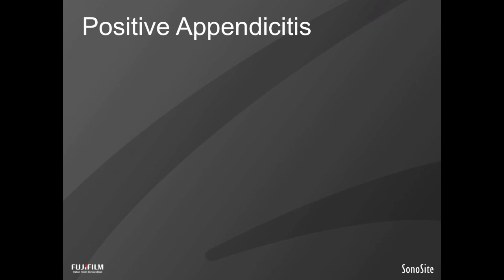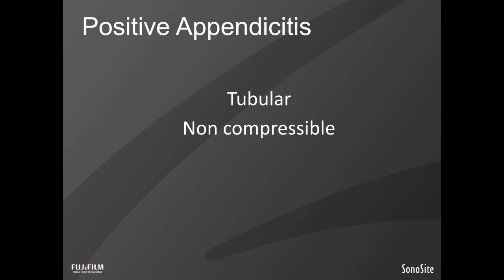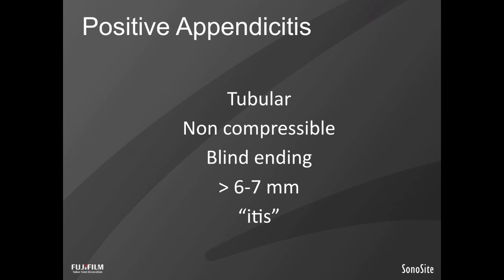There are a couple of features we need on our study to prove positive appendicitis. The first thing is a tubular, non-compressible, blind-ending loop — that little snake or little balloon — that is greater than six or seven millimeters depending on which textbook you read. Probably the most important thing is the 'itis' that is part of appendicitis — the inflammation of the appendix. You can imagine someone walking around with a six millimeter appendix who doesn't have the disease. The 'itis' is the inflammation, and it's probably comparable to the fat stranding we identify on CT scan.